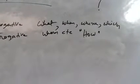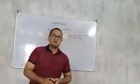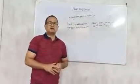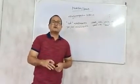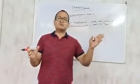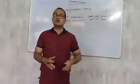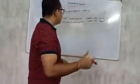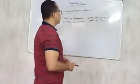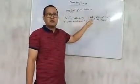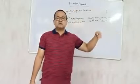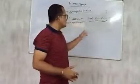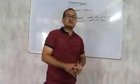In WH-interrogative sentences, the questioner asks a direct question and expects a direct answer. For example, 'What is your name?' — the questioner expects the boy to tell his name. 'Where are you going?' — the questioner expects the person to tell the place. Similarly for 'which', 'when', and 'how'. If someone asks 'How are you?', the answer will be 'I am fine', 'I am okay', or 'I am not so good'. Whatever the answer, it is a straightforward, direct answer.